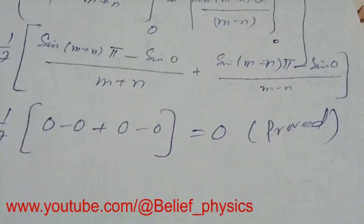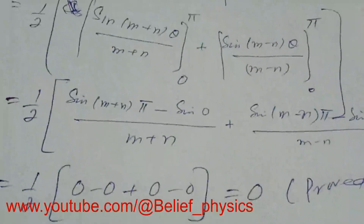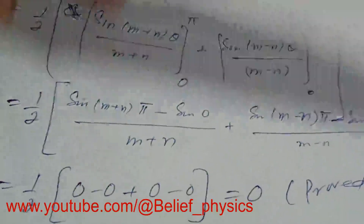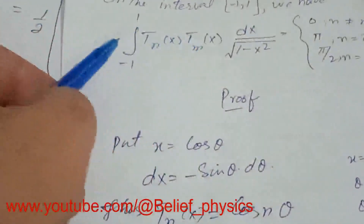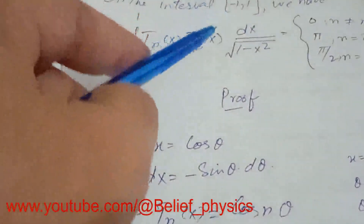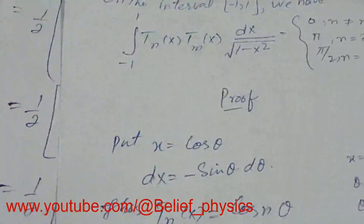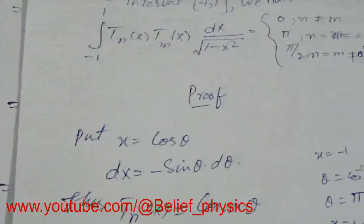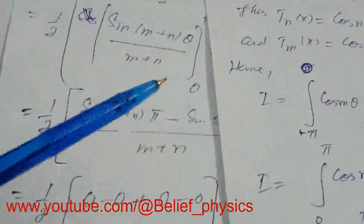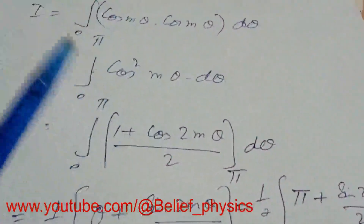We have proved that when m is not equal to n, the integral from minus one to one of T_n(x) T_m(x) dx over the square root of one minus x squared equals zero.